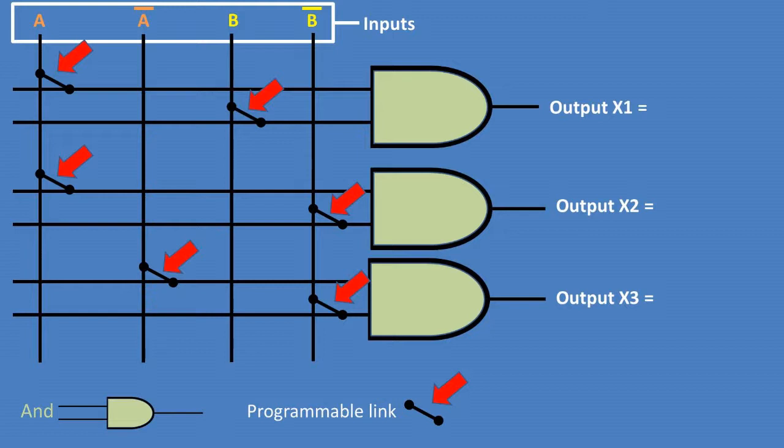The way you read an AND array is by looking to see where the programmable link is for both the AND gate inputs. If it is connected to an input, then this is one of the values that we get inputted to the AND gate. So in this example, for output X1, the A and B inputs are connected by a programmable link, therefore the output is A AND B.